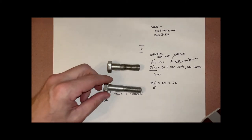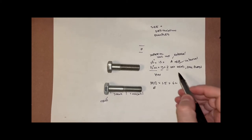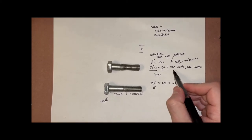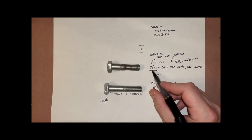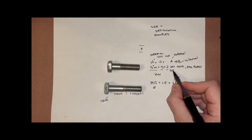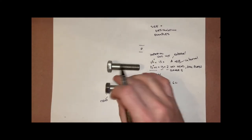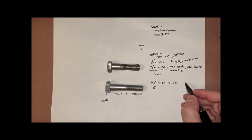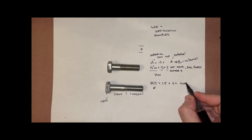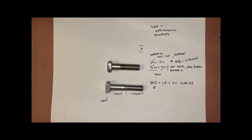In both imperial and metric designations you can also include the grade. For imperial you would write: one-half inch by 13 by two, grade five. For metric you would write: class 8.8. We'll discuss grades in a bit more detail shortly.